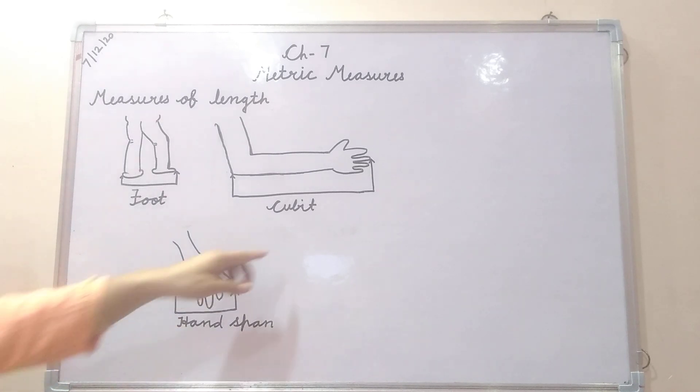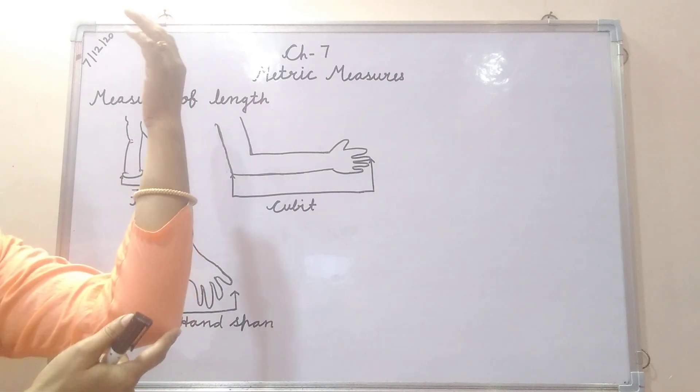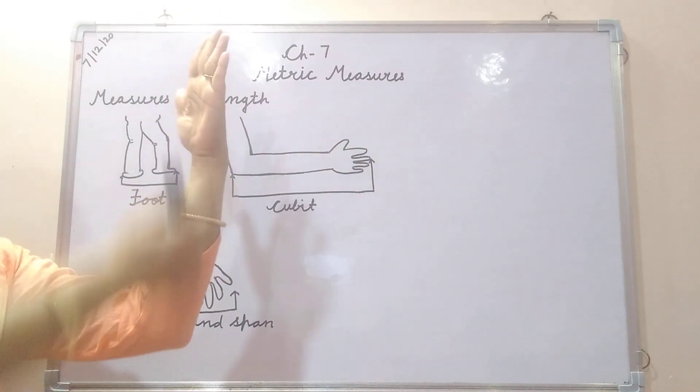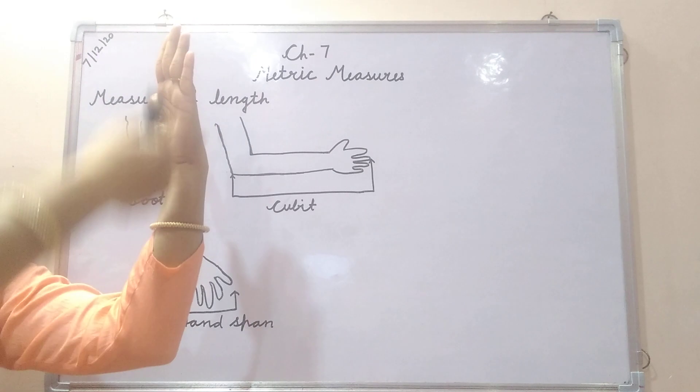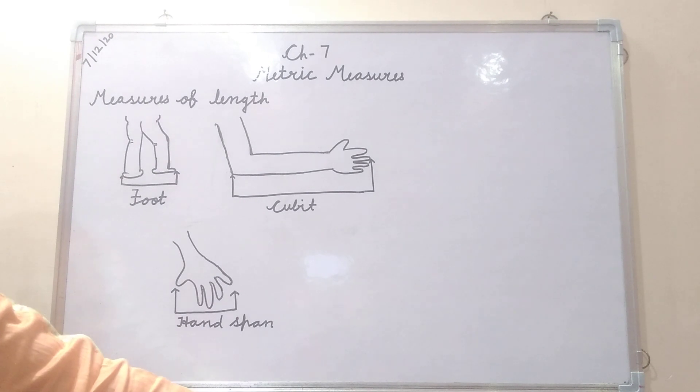Now you can see here the next one that is cubit. Cubit is the length between start from your elbow and go up to your middle finger. That is called cubit. That means suppose if I have to measure the length of this wall. So in my cubit, it will come in different number and in your cubit, it will come in different number.